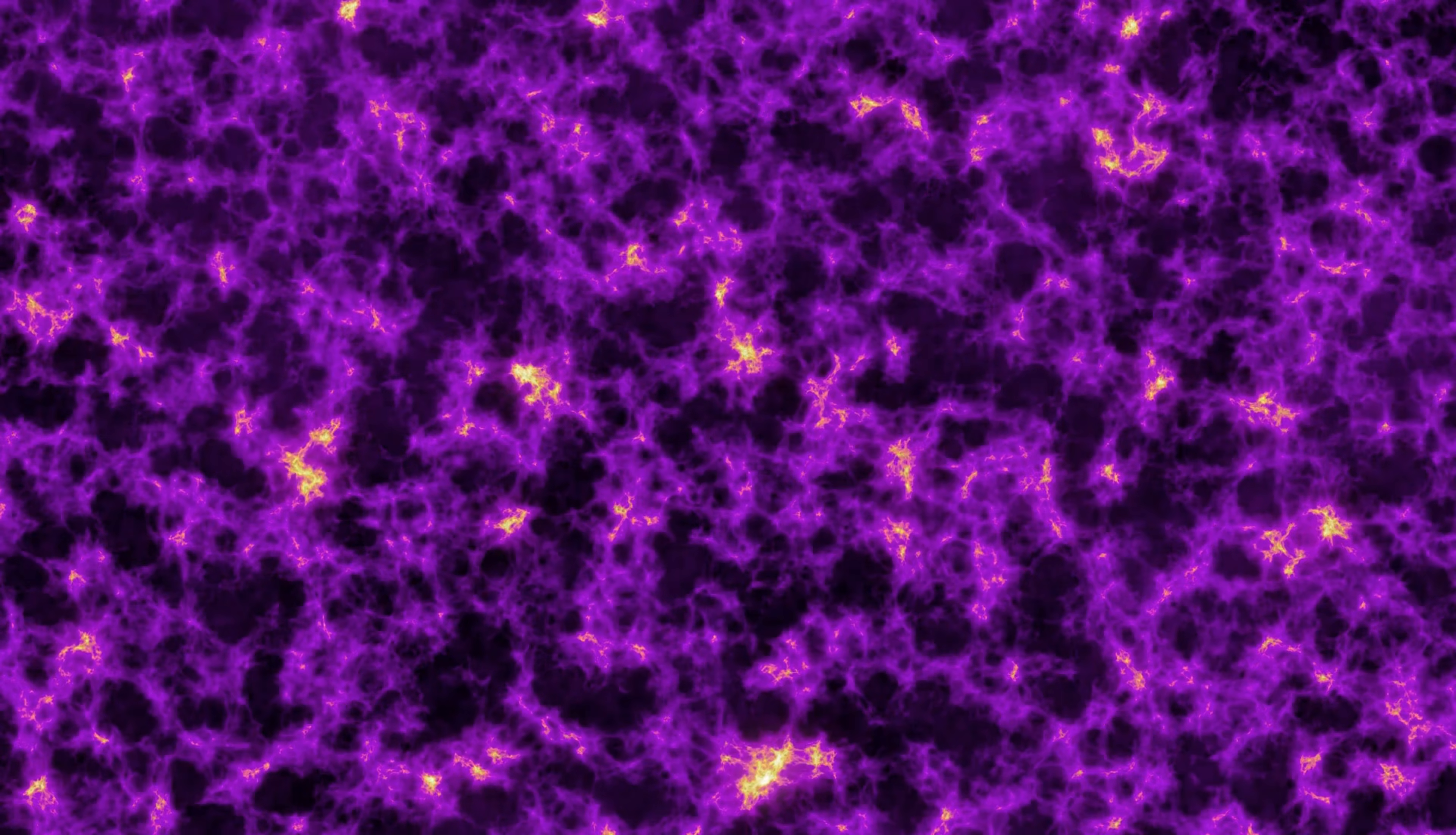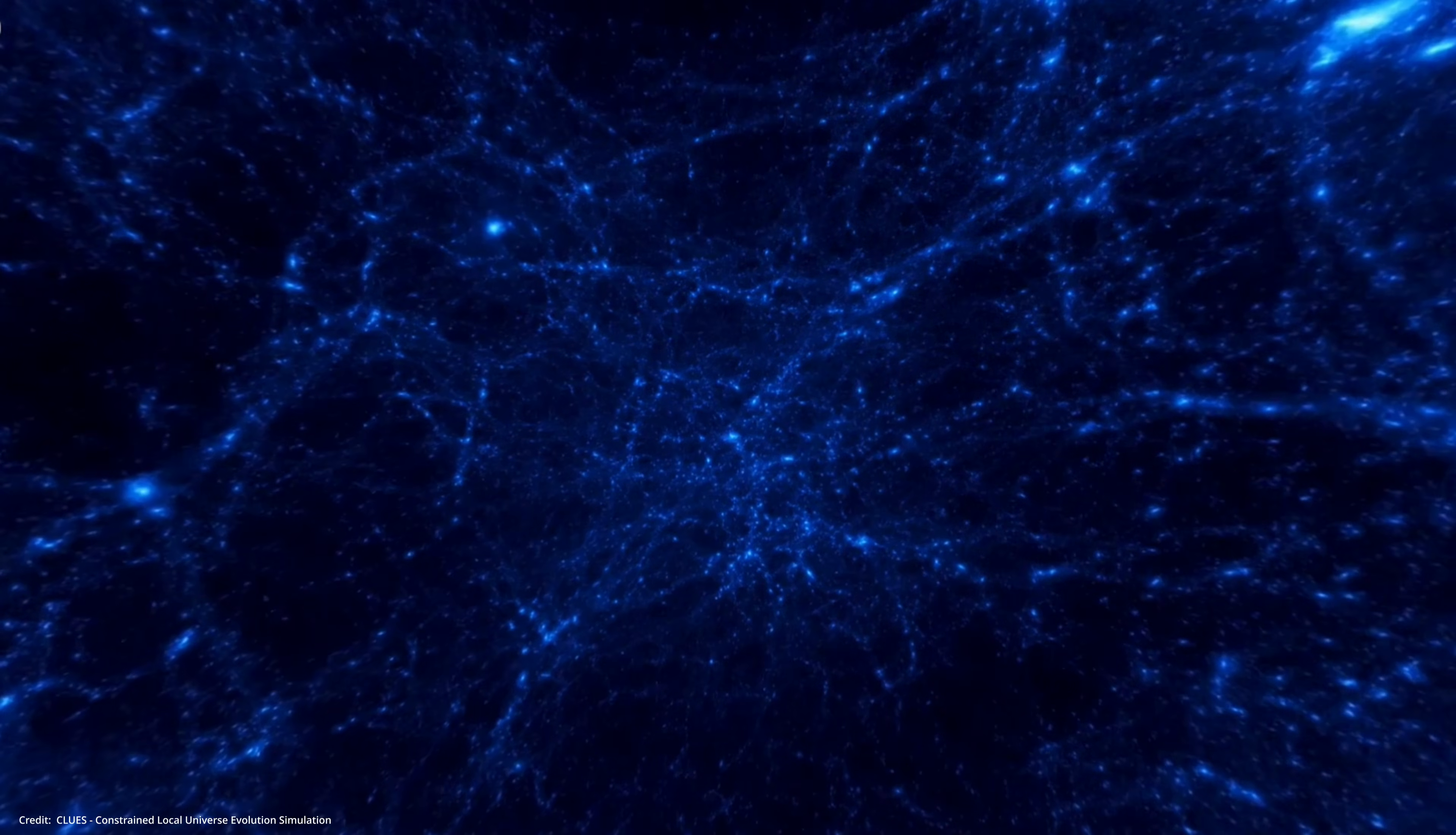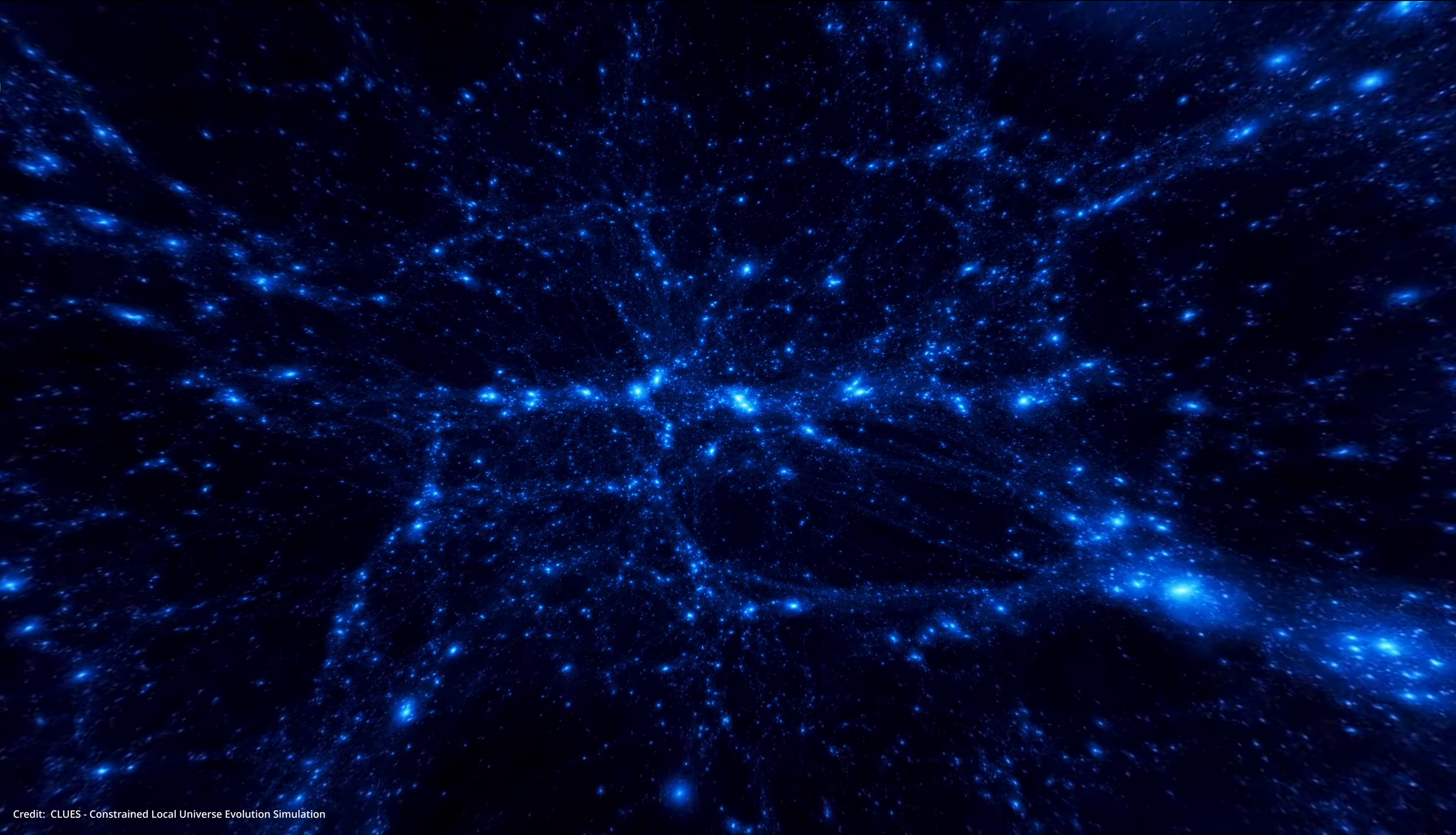The backbone of this web is made of filaments which have a unique composition. They aren't made of ordinary matter like stars and planets, but are primarily composed of dark matter, the mysterious invisible substance that makes up most of the universe's mass. These filaments act as cosmic highways channeling galaxies and gas towards the nodes.